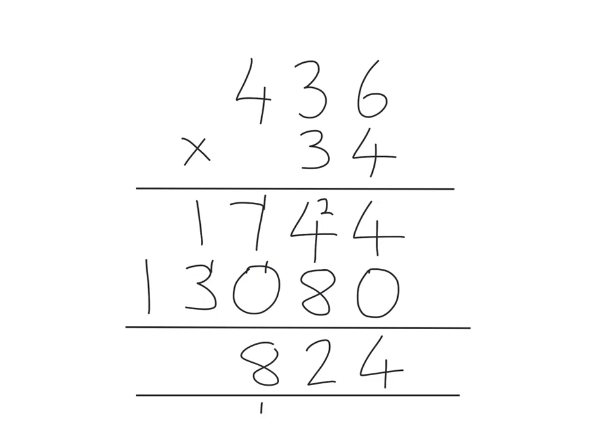Seven add zero add that extra one is eight. The next column, one add three is four. And final column, we've just got one there. So our answer to 436 multiplied by 34 is 14,824.